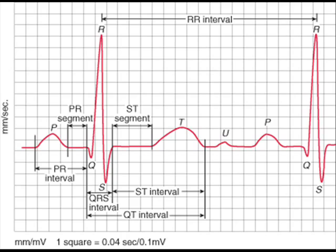Now let us see some of the intervals. These are important because they change in various diseases. For example, P-R interval changes in heart blocks, and R-R interval changes in bradycardia and tachycardia. R-R interval is the interval between two R waves. P-R interval is the interval between P and R. S-T segment is the linear interval between the end of S wave and the beginning of the T wave, whereas S-T interval is the interval between the end of S and the end of T. Q-T interval is the interval between Q and the end of T, and QRS is the interval between Q and S.